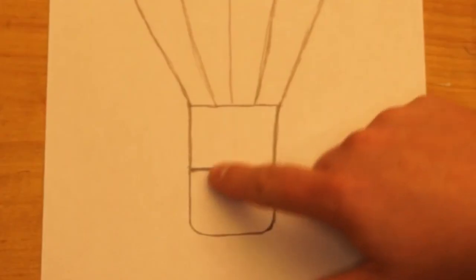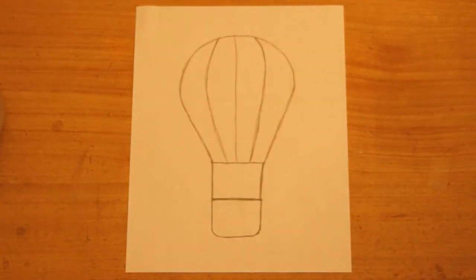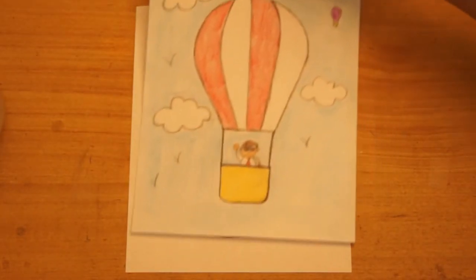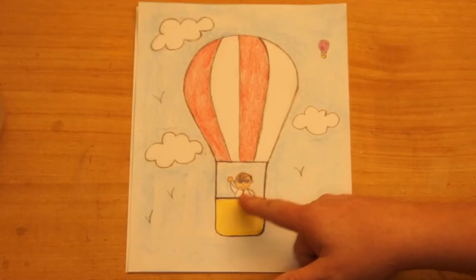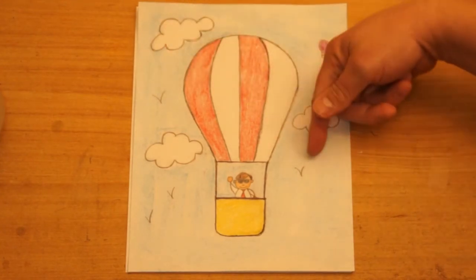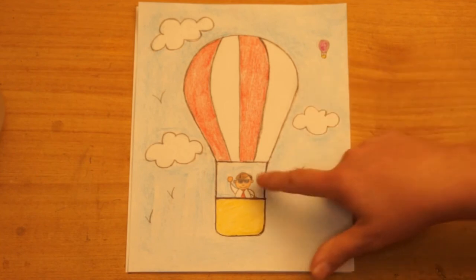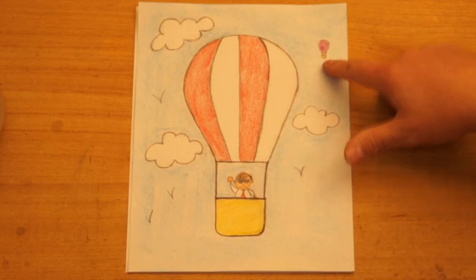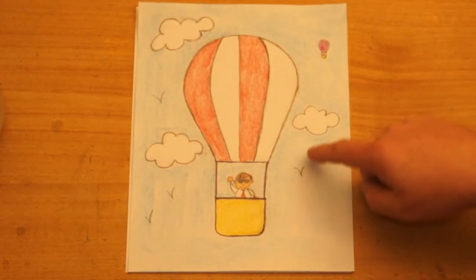Next I want you to draw yourself riding in the basket. And add other details. Here's one that I did. And here I am riding in the basket. I added some clouds in the sky. And some birds. Also another balloon. You can make other balloons like this one. But if they're far away you'll want to make them small. So you can make other balloons in the background too.